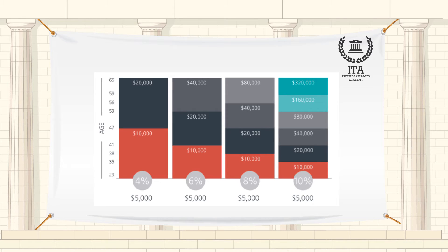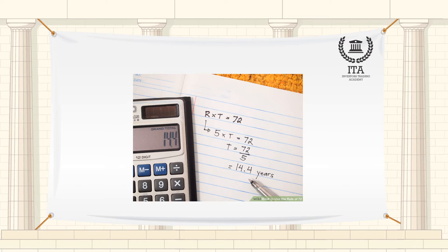The Rule of 72 is reasonably accurate for interest rates between 6 and 10 percent. When dealing with rates outside this range, the rule can be adjusted by adding or subtracting one from 72 for every three points the interest rate diverges from 8 percent.